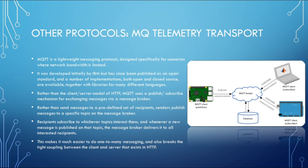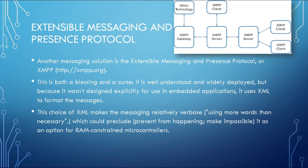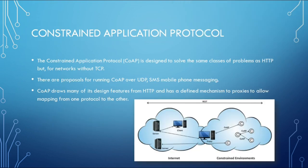Another protocol to consider is the Extensible Messaging and Presence Protocol (XMPP). It is well understood and widely developed, but because it wasn't designed explicitly for embedded applications, it uses XML to format the messages, which can be both a blessing and a curse. One more protocol standard for the IoT web platform backend is the Constrained Application Protocol (CoAP). CoAP is designed to solve the same classes of problems as HTTP but for networks without TCP. There are proposals for running CoAP over UDP and SMS. CoAP draws many of its design features from HTTP and has defined mechanisms for proxies to allow mapping from one protocol to another.